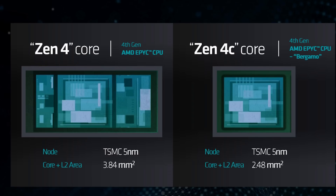You get higher energy efficiency because this thing is targeted at slightly lower frequencies, but you can pack more into a CPU. Part of the reason they were able to do that is due to the core area. A standard Zen 4 core runs at about 3.85 square millimeters — that's the core plus the L2 cache area. With Zen 4C, this goes down to about 2.5 square millimeters, essentially a 35% reduction in core area, and in certain parts of the core, as much as 50%. And yet they've managed to keep exactly the same architecture, exact same instructions, and exactly the same latency.